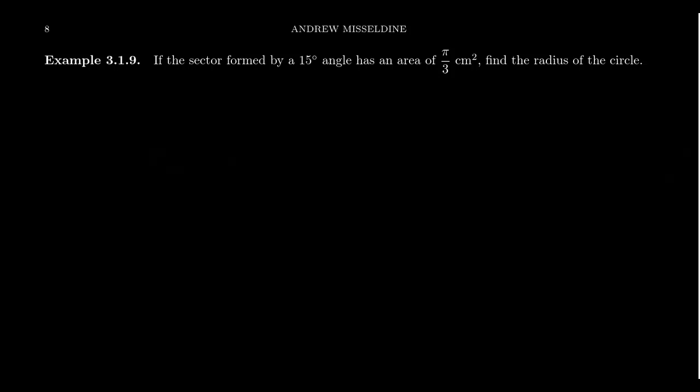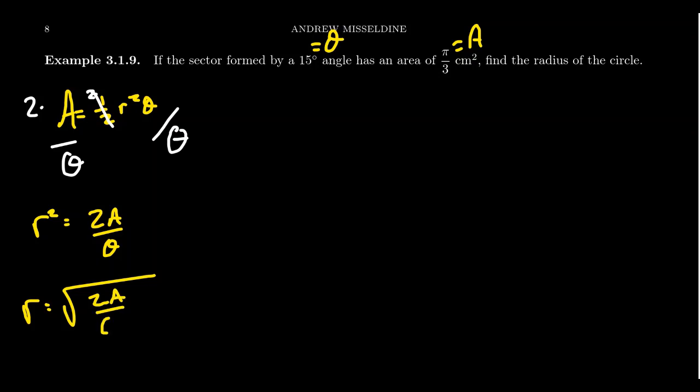Let's consider another problem. If the sector formed by a 15 degree angle has an area of pi over 3 square centimeters, what was the radius of the circle? So notice what's going on here with our formula: area equals 1 half radius squared theta. We know theta is this 15 degrees. We know the area, we want to solve for the radius. Times both sides of the equation by 2 to cancel out the 1 half here. Divide both sides by theta. You're going to end up with r squared equals 2A over theta. Take the square root because the radius does have to be positive here. You're going to get r equals the square root of 2A over theta. So we can solve for r easy enough if we know A and theta.